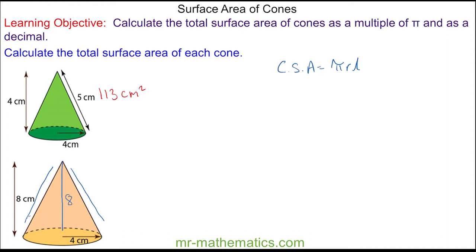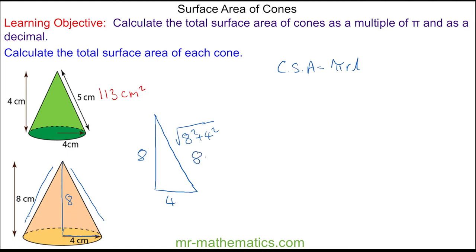We also know the base radius is four, so now we have a right-angle triangle where the perpendicular side is eight and the base side is four. We can use Pythagoras's theorem — the square root of eight squared plus four squared — to work out the hypotenuse, which is approximately 8.9 centimeters. So 8.9 is our slant length l.